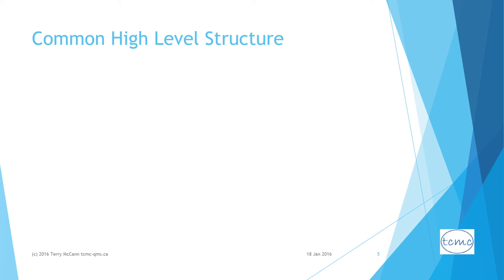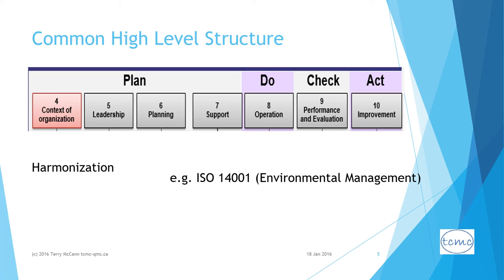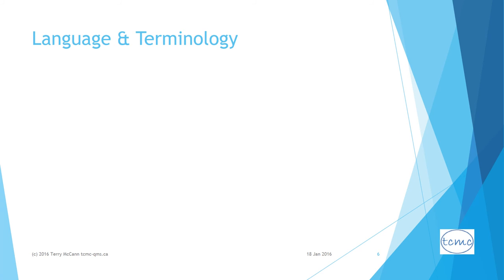Perhaps the most superficially obvious difference in the new revision is how the structure has been changed to align with the common 10-clause high-level structure developed by ISO. This is to facilitate greater harmonization among the many different management system standards. For instance, the new revision to ISO 14001 also adopts the same structure, which is built around the PDCA — plan, do, check, act — sequence. The intent was to make it easier for organizations to address the requirements of more than one ISO management system standard within a single integrated system of management processes.